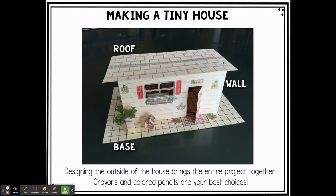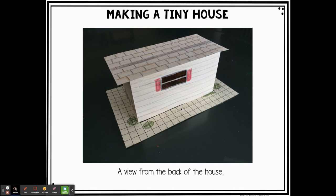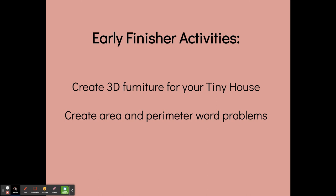Here's the outside of it. Remember, designing the outside of the house brings the entire project together. Crayons and colored pencils are the best choices. This person put lighting on the outside, an address, shutters. This one did cut the windows out. They've got flowers and a mailbox. There's the back of it. Here is looking through the window at what it would look like — and this person made 3D furniture. So the early finisher activities were to create 3D furniture for your tiny house and/or create area and perimeter word problems.